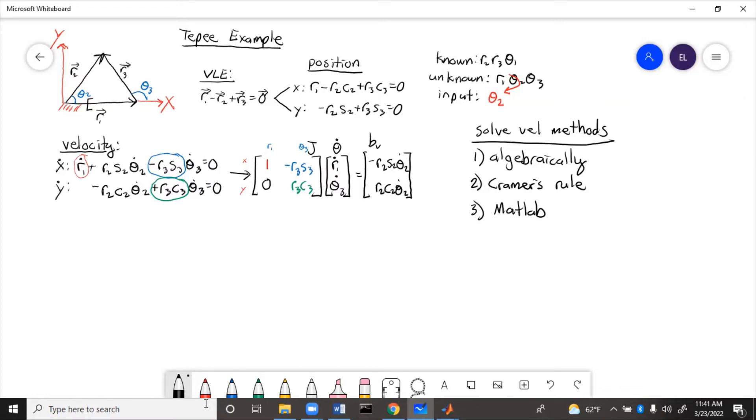So to solve algebraically, basically, we need to rearrange the equations to get theta 3 dot and R1 dot. Well, R1 dot does not show up in the Y dot equation. The only unknown there is theta 3 dot, so that'll be the easiest way to get theta 3 dot. So we just rearrange that.